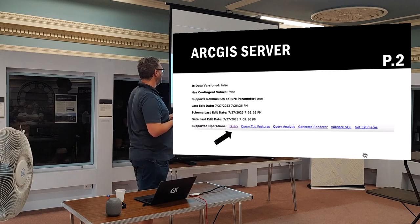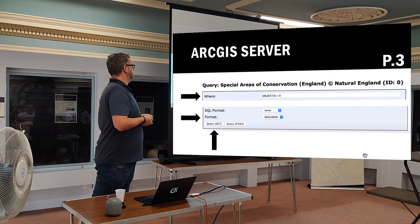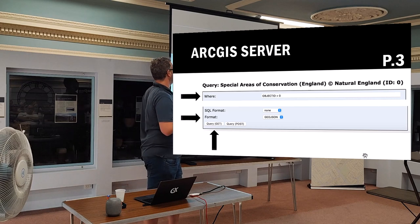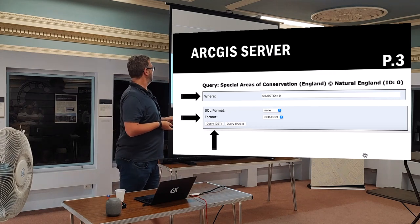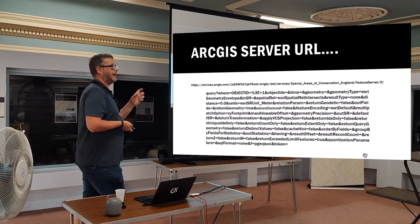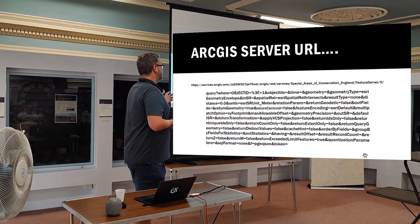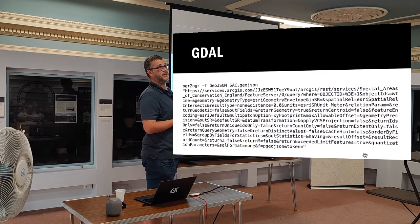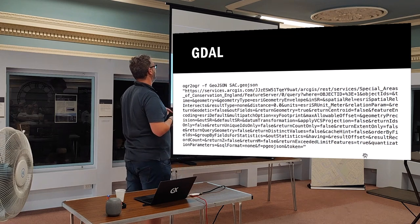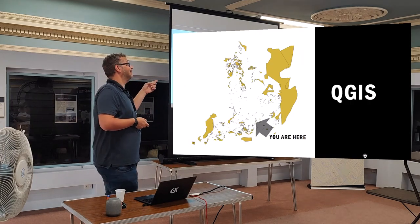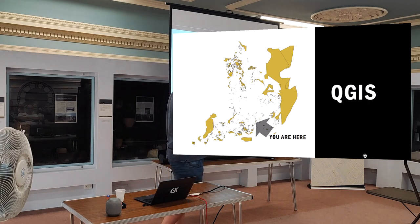If you go into that query button, you've got a huge table of how you can query the data. I've cheated and said, I know there's a column called object ID, so where object ID is bigger than zero. I'm going to change my format to GeoJSON, and if I now press query — boom — I no longer have a dynamic URL. I've got a static URL to go and get that data. Here's a map showing the data — that's where we are at the moment.